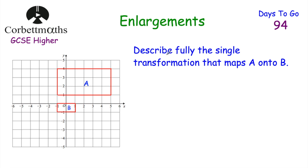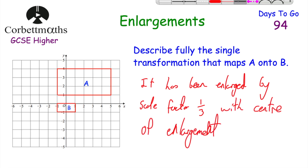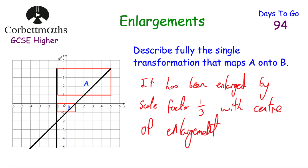Next, we have rectangles A and B on a grid and we need to describe the single transformation that maps A onto B. It's an enlargement. The length of A is 6 and the length of B is 2, so B is one third of A — meaning the scale factor is one third. To find the centre of enlargement, we draw lines through corresponding points. Both lines pass through the point (-1, -2), so the centre of enlargement is (-1, -2).